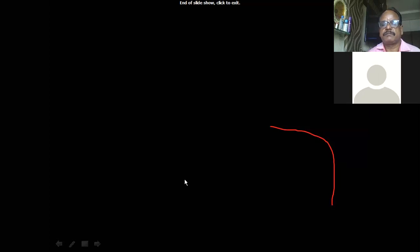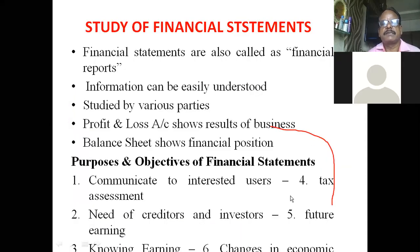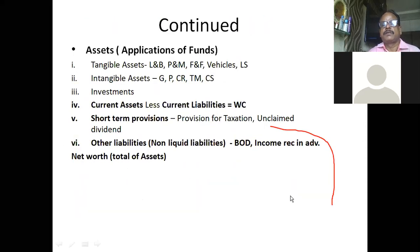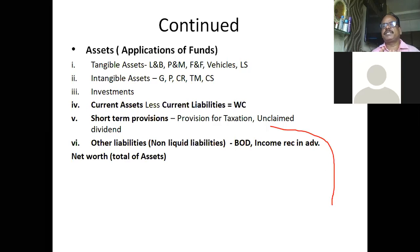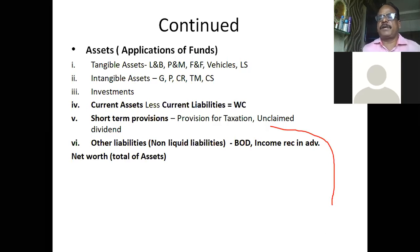The total capital employed on the liability side is the total to be considered. The asset side is started with the heading applications of funds. Sources of funds on the liability side show how funds are raised, and applications of funds on the asset side show how these funds are utilized — by purchasing land and building, plant and machinery, and other assets.